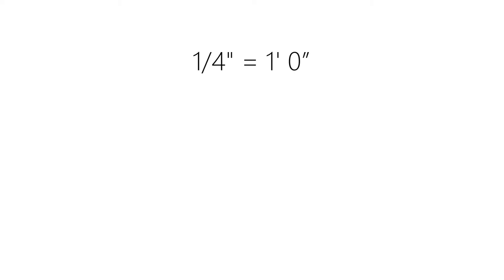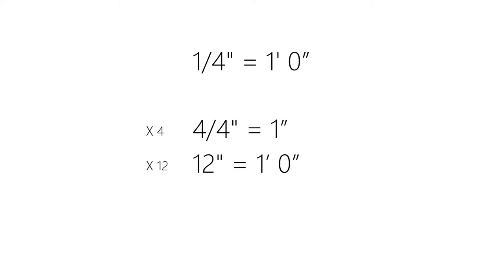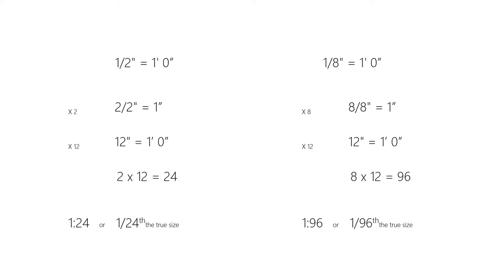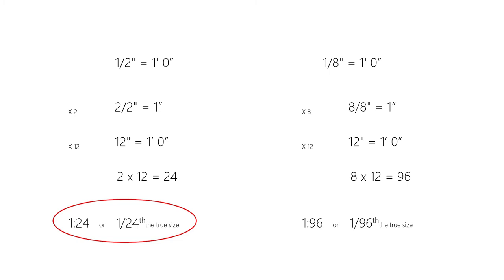Now, where did we get our 1/48th from? Remember that a scale factor of 1 to 48 represents the same unit. So to understand that 1/4 inch equals 1 foot is 1/48th the true size, we have to make 1/4 inch the same unit as 1 foot. Start by converting the 1/4 inch to 1 inch by multiplying by 4. Next, convert that inch to feet by multiplying by 12, because there are 12 inches in a foot. So we took our fraction 1/4 inch, multiplied it by 4 then by 12, and we get our foot measurement — and 12 times 4 is 48. For example, 1/8 inch is 1/96th the true size, and 1/2 inch is 1/24th the true size.